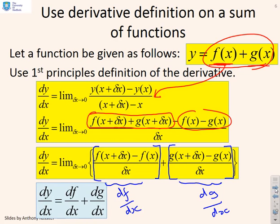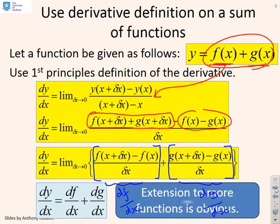And so we get the result. dy/dx is df/dx plus dg/dx. Now an extension to more functions - so if you had three functions or four functions and so on should be obvious.